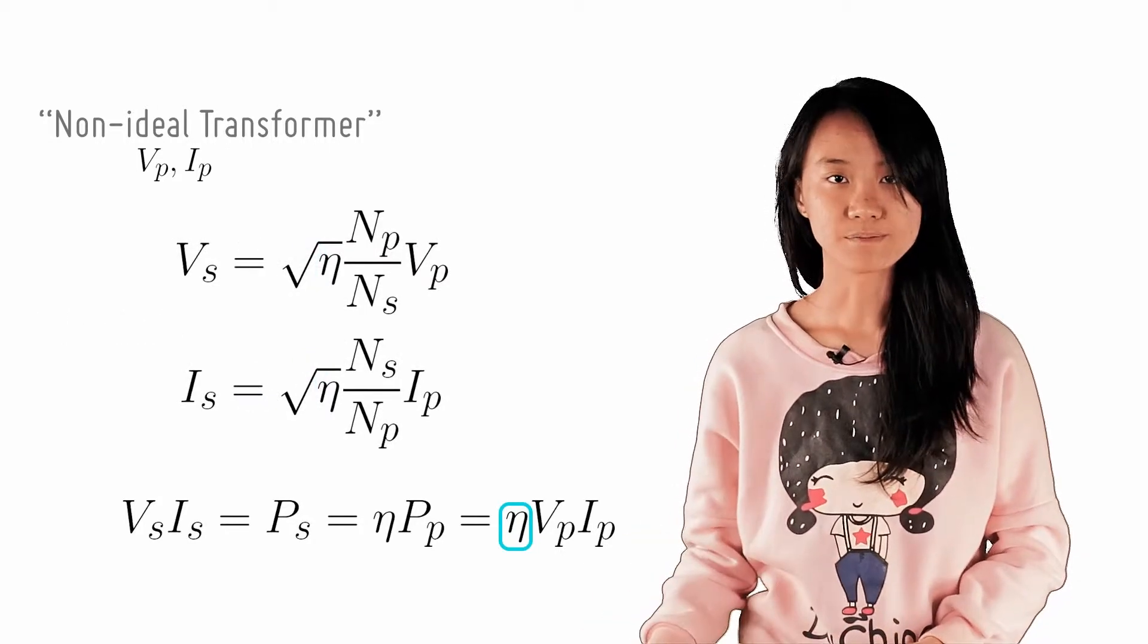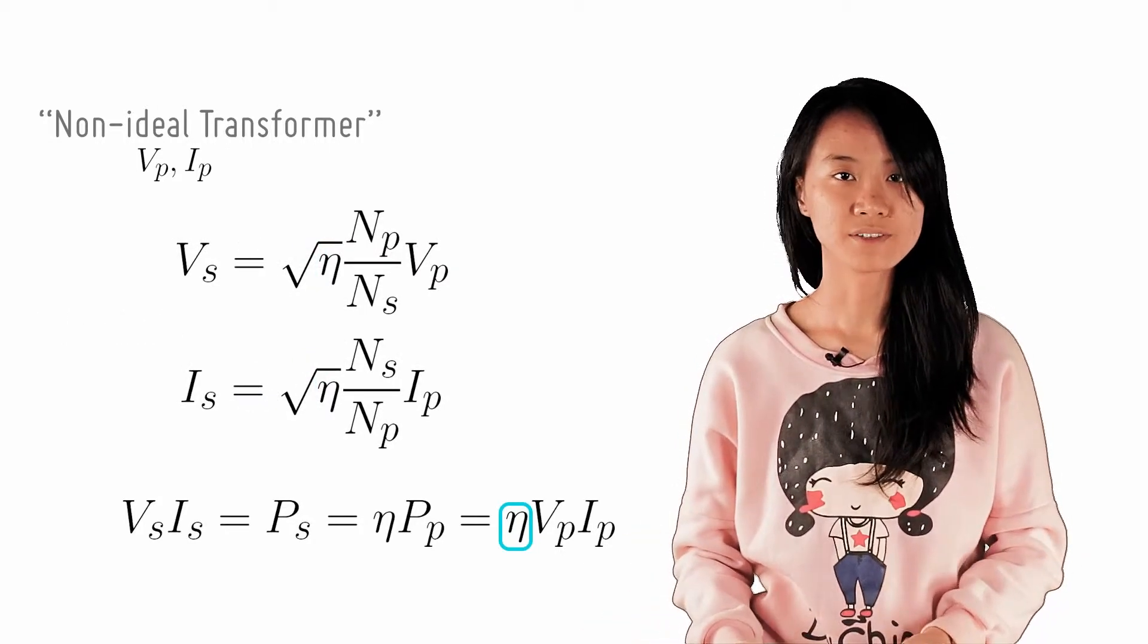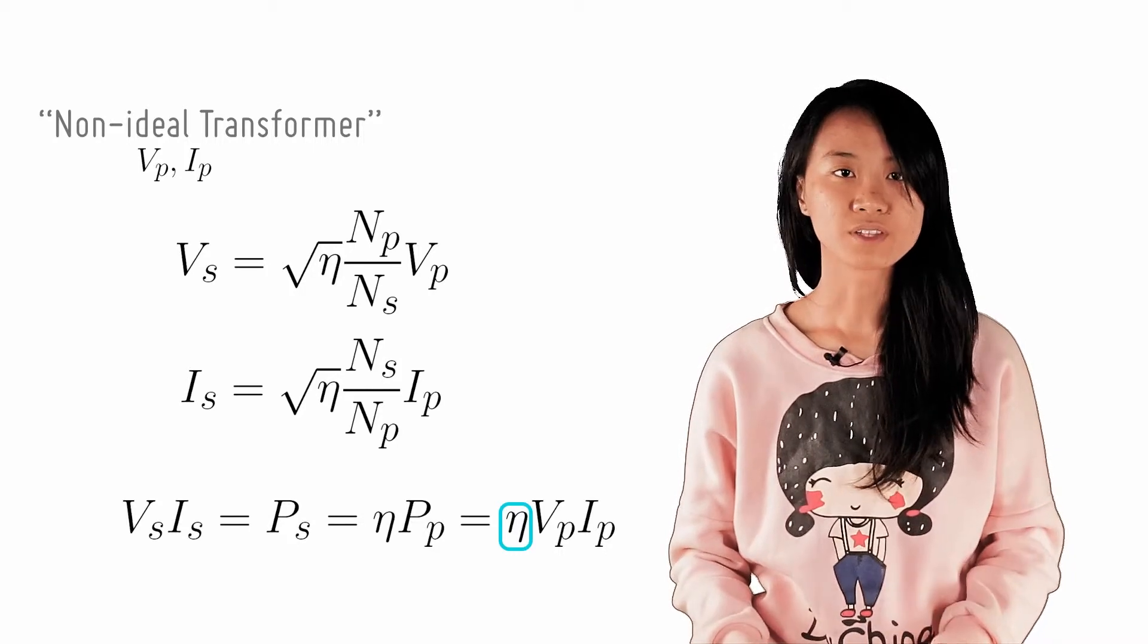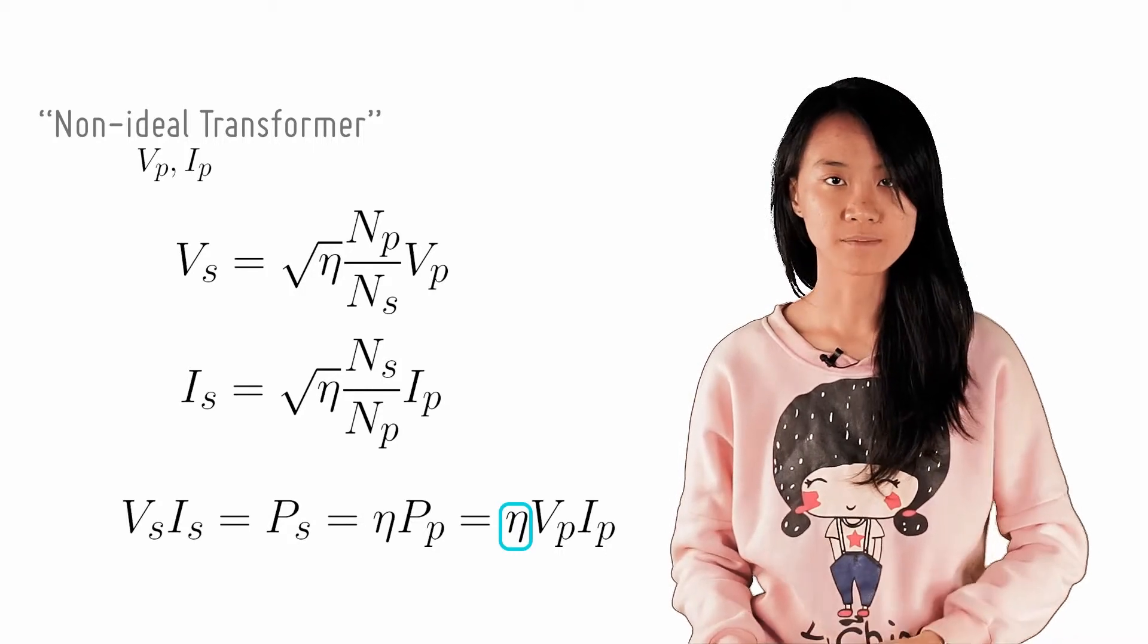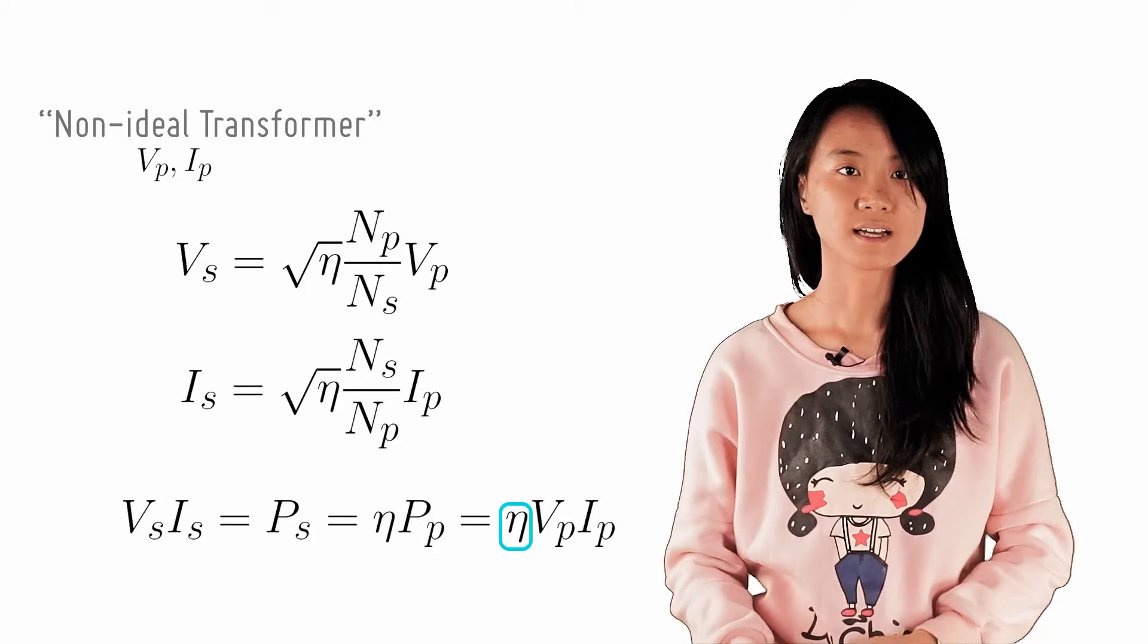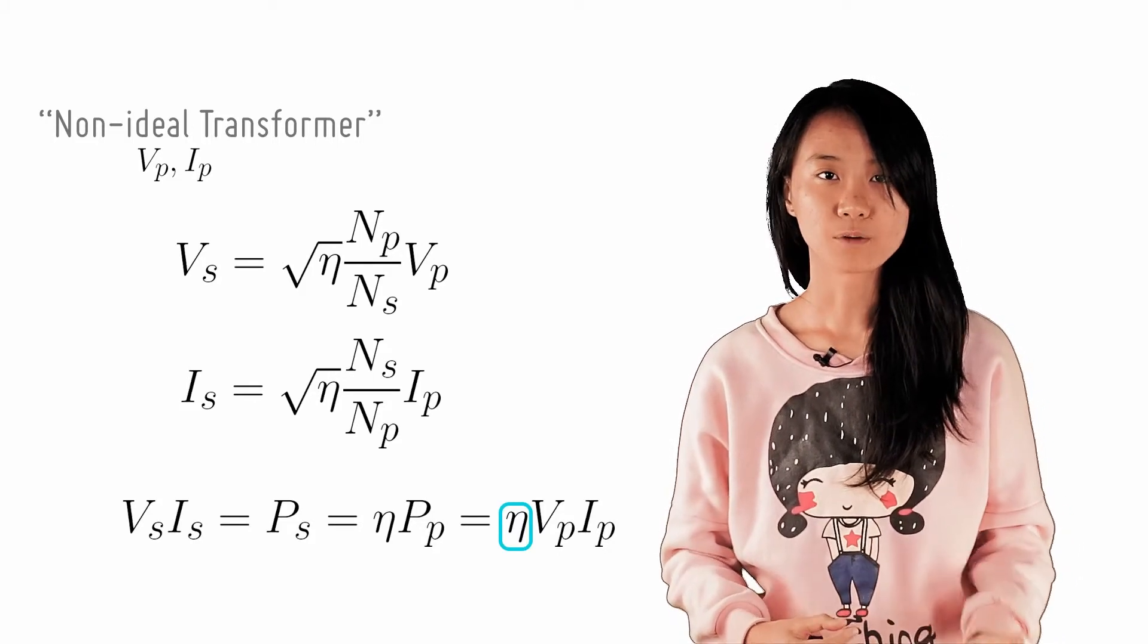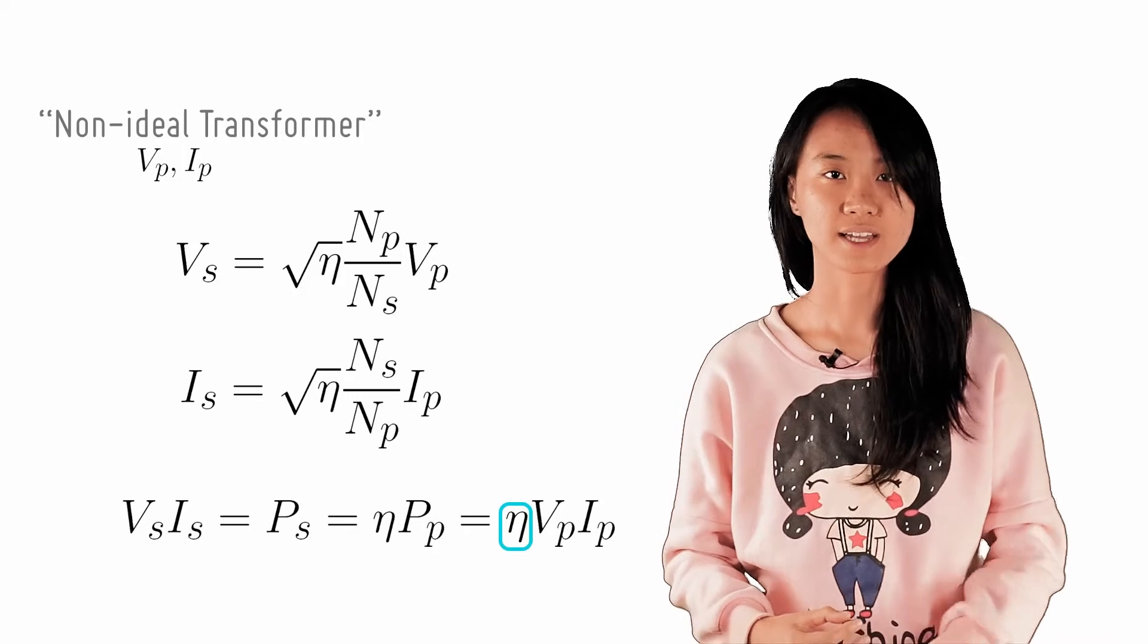Using the same example, if the transformer has 81% power efficiency, then the output voltage and current would be the square root of 81%, which is 90% of the idealized power output of voltage and current.